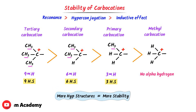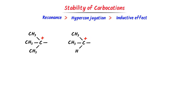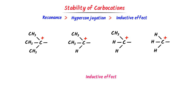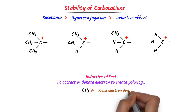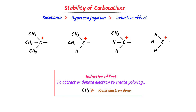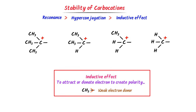Hence this is the order of stability of carbocations. Now let me explain it according to the inductive effect. Anything that attracts or donates electrons to create polarity is called inductive effect. Remember that an alkyl group like methyl is a weak electron donor.